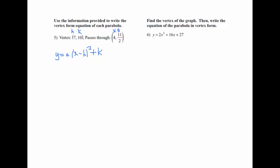We want to plug in what we know: y is 11/2, we don't know a yet, x is 4, h is 7, k is 10. Once plugged in, subtract 10 over to the left side. If it helps, change 11/2 to a decimal: 5.5 minus 10 is negative 4.5. Then 4 minus 7 gives negative 3; negative 3 squared is 9, so this is 9a. Be careful about order of operations — don't add 9 plus 10 before multiplying by a. Divide by 9 and that gives negative one-half.